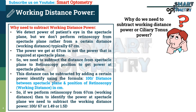If we perform retinoscopy from 67 centimetres, then to identify the power at the spectacle plane we need to subtract the working distance power, which is 100 divided by 67, or approximately 1.49 to 1.5 diopters.